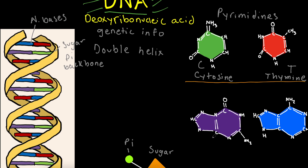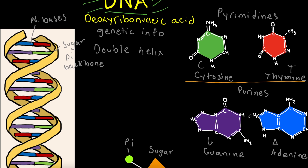Now let's move to our other nitrogenous bases. The first, the purple structure, is known as guanine, also shown as G. The second is called adenine, also shown as A. Guanine and adenine are part of a group called the purines. The purines have two rings as their structure. To memorize which nitrogenous bases are purines, think of G as guacamole and A as applesauce — guacamole and applesauce are basically a puree, which is where the name purines comes from. Pyrimidines and purines will always bind together — there's no pyrimidine binding with pyrimidine.